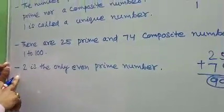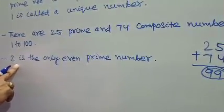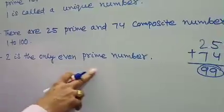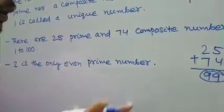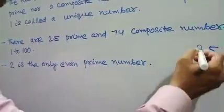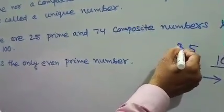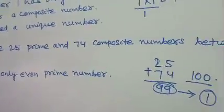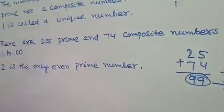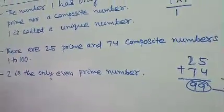Our next point is: 2 is the only even prime number. Out of the 25 prime numbers, only 2 is even, and the rest are all odd prime numbers.